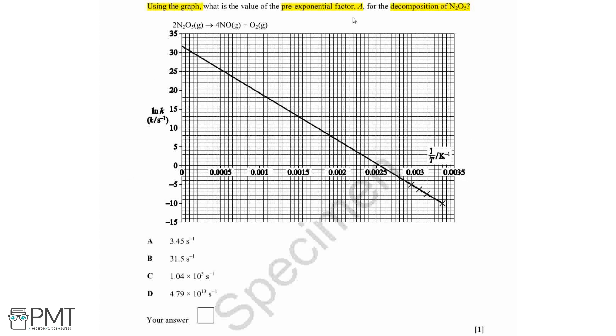With these values and noting that we need to work out the pre-exponential factor, we know that this is going to be a graph of the Arrhenius equation in linear form, which is in your datasheet, and the equation is ln k equals negative activation energy divided by the gas constant R and the temperature plus ln A.